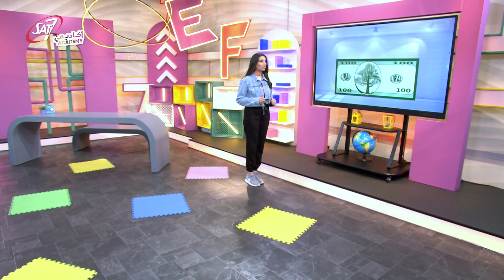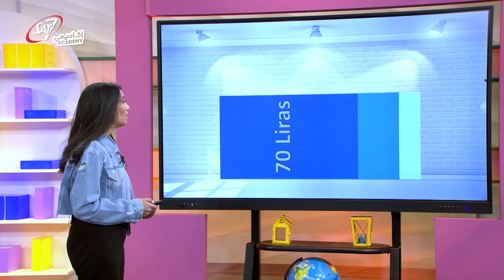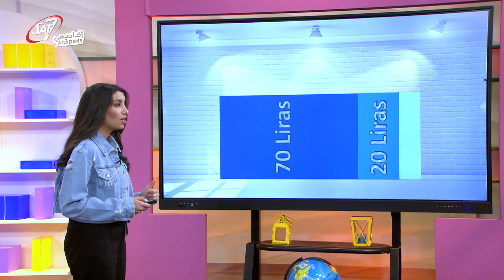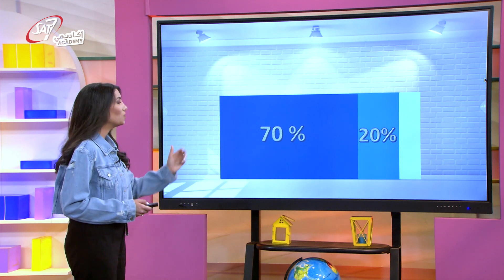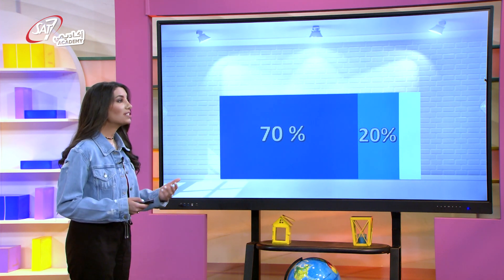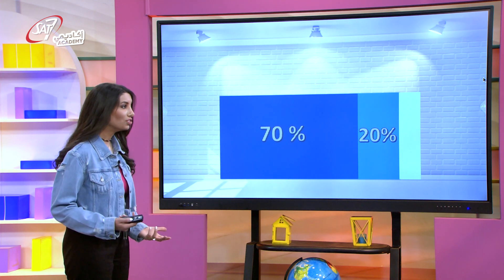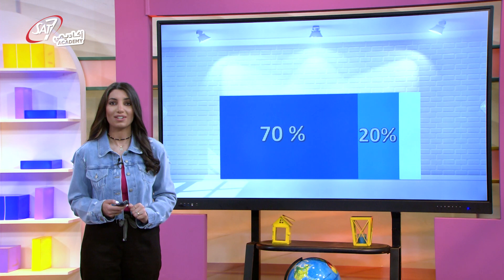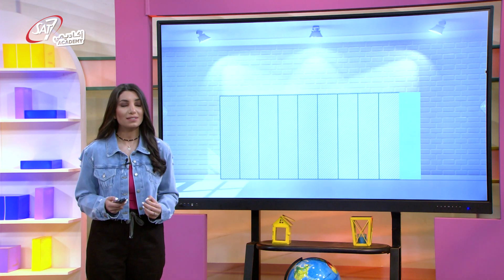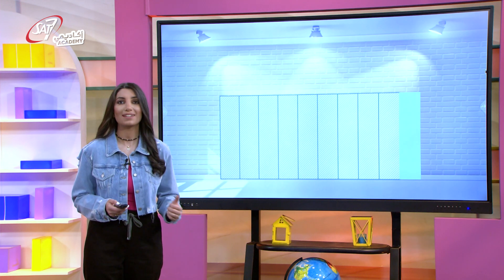Imagine you have 100 liras. You go out with your friends and spend 70 liras on lunch and 20 liras on ice cream. You spent 70 liras out of 100 on lunch and 20 on ice cream. So 70% were spent on lunch and 20% on ice cream. How much is left from the 100? 10. You spent 90 liras — 90% of your money — and you have 10% left.